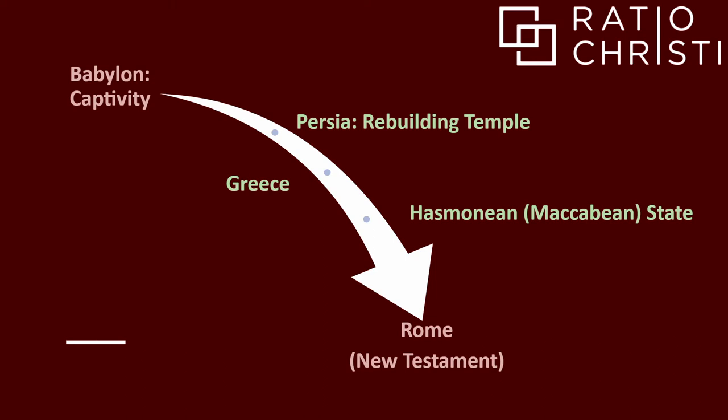Here's a timeline to point out what I'm going to be talking about. I'm not going to be talking about the Babylonian captivity — that's a different lecture. I'm not going to be talking about Rome — also a different topic. The Deuterocanon was written in the Persian period, the Greek period, and the Jewish Hasmonean or Maccabean state — not focusing on Babylon or Rome, but on that period where the second temple was built before Rome conquered Palestine.